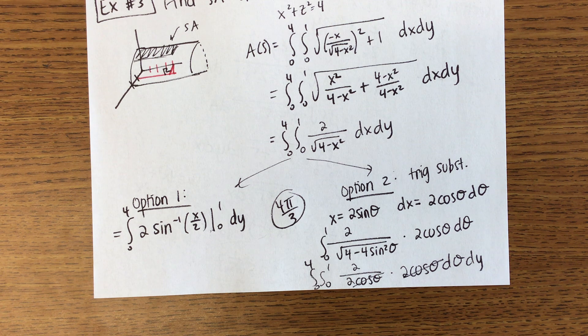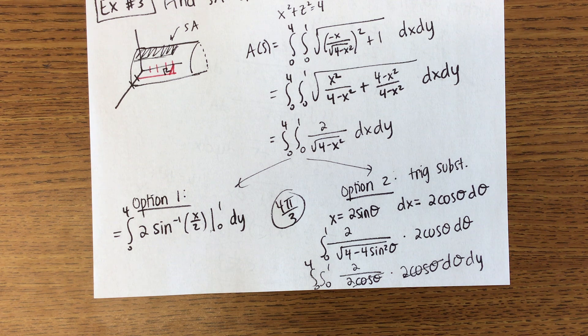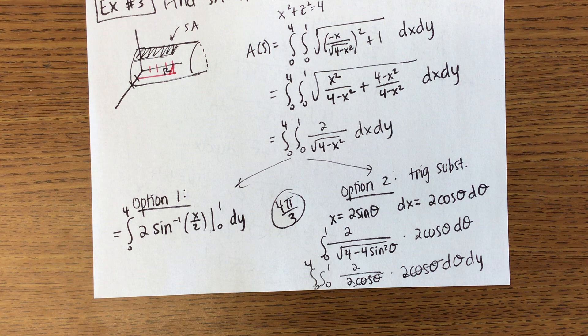If you care it ends up being 4 pi over 3. Okay. This is the idea for surface area. Any questions?